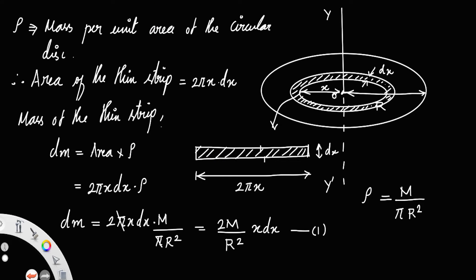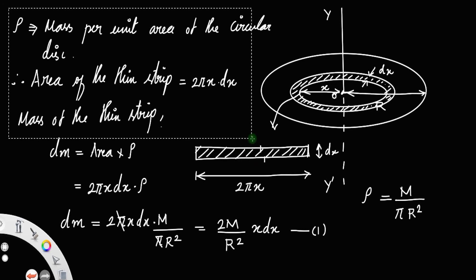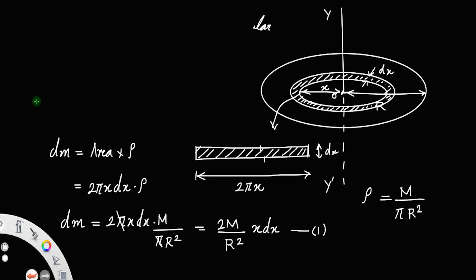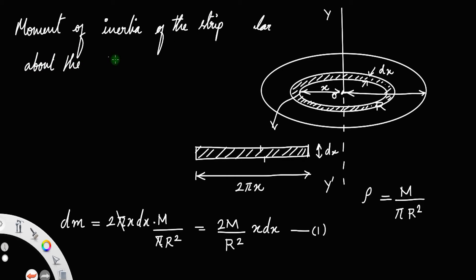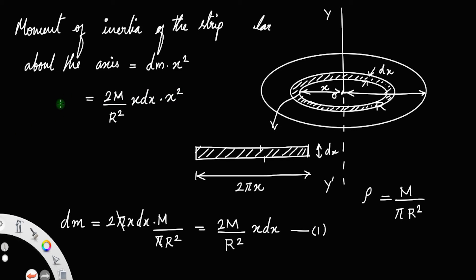Now we must find the moment of inertia of this strip about the axis. The moment of inertia of the strip about this axis will be the mass of the strip dm, into the square of the distance from the axis, that is x². Substituting dm = 2m/r² · x·dx into x², we get dI = 2m/r² · x³·dx.